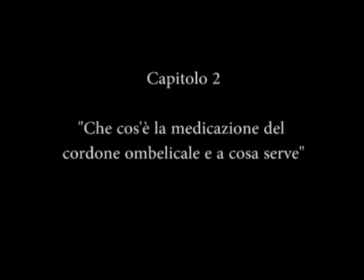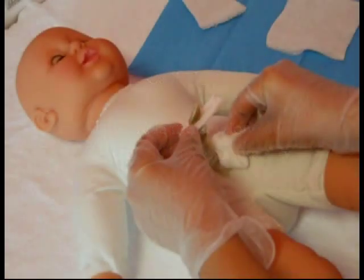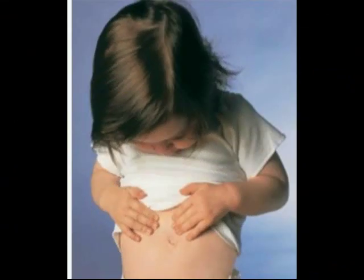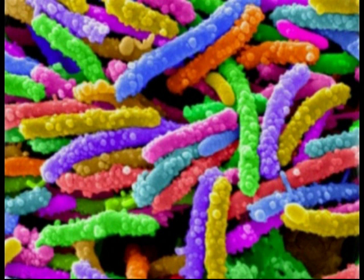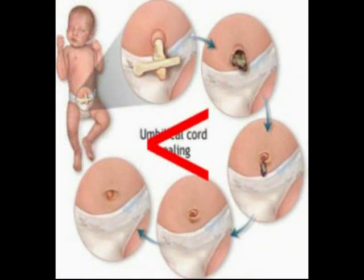La medicazione del cordone umbilicale è una pratica di routine eseguita su ogni neonato durante il processo di essiccazione del moncone, finché questo non cade. Prima di essere dimessa, ogni mamma deve imparare come eseguirla, in modo da poterla continuare a domicilio; è quindi necessaria e importantissima l'educazione dei genitori. Attraverso una corretta gestione e medicazione del cordone umbilicale, non solo si prevengono le complicanze infettive, ma si riducono anche i tempi del processo di essiccazione e di caduta dello stesso e lo stress materno.